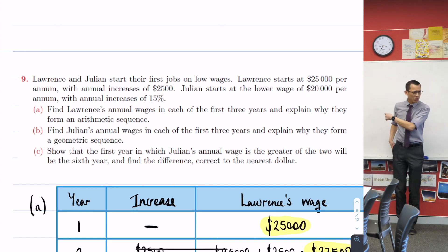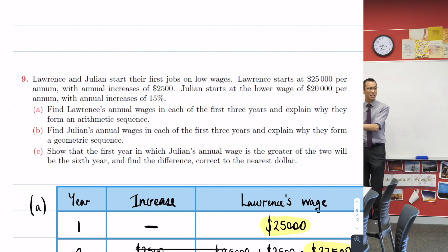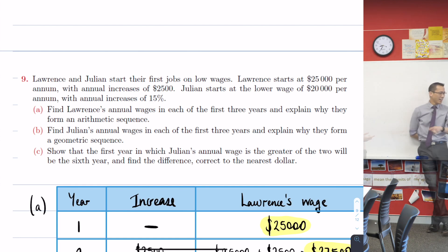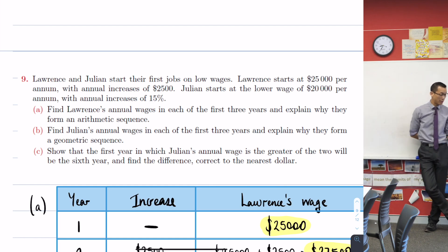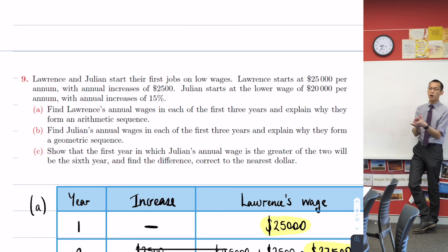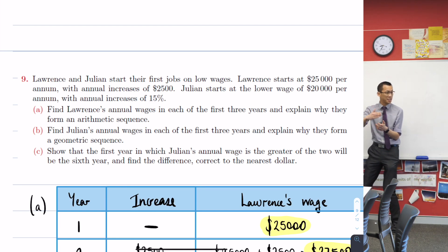Okay, do you remember the question? It's these two guys. One has a wage that's increasing. One has a wage that's increasing according to this, where it's actually saying annual increase of $2,500. Is it Julian or is it the other guy? It's Lawrence. Lawrence has an income, starts at $25k and then it goes up in steps that are the same every time. So what kind of sequence does that form? You go up by the same difference every time. That's an arithmetic sequence.